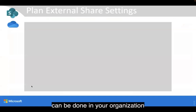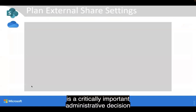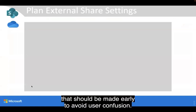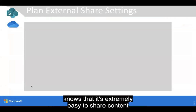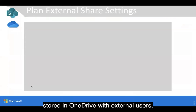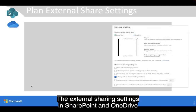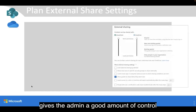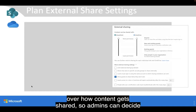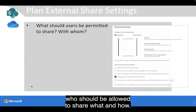Planning how external sharing can be done in your organization is a critically important administrative decision that should be made early to avoid user confusion. Anyone who's ever used OneDrive knows that it's extremely easy to share content with external users, which is great in terms of usability but potentially worrying to organizations that want to safeguard their sensitive data. The external sharing settings in SharePoint and OneDrive give the admin a good amount of control over how content gets shared, so admins can decide who should be allowed to share what and how.